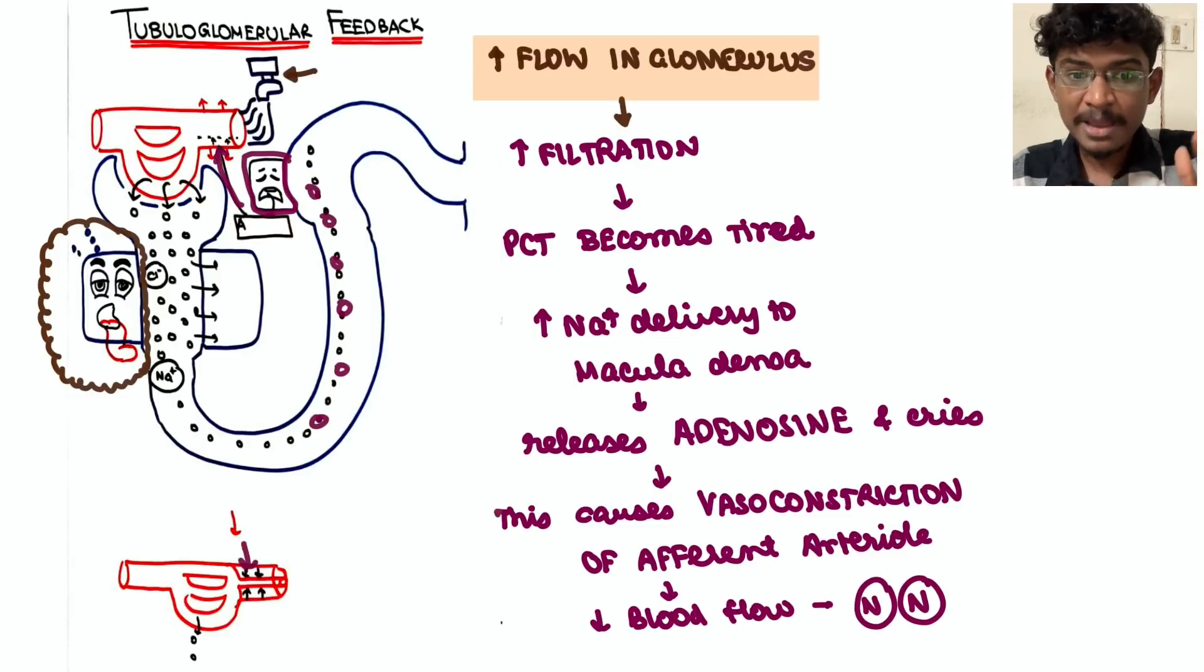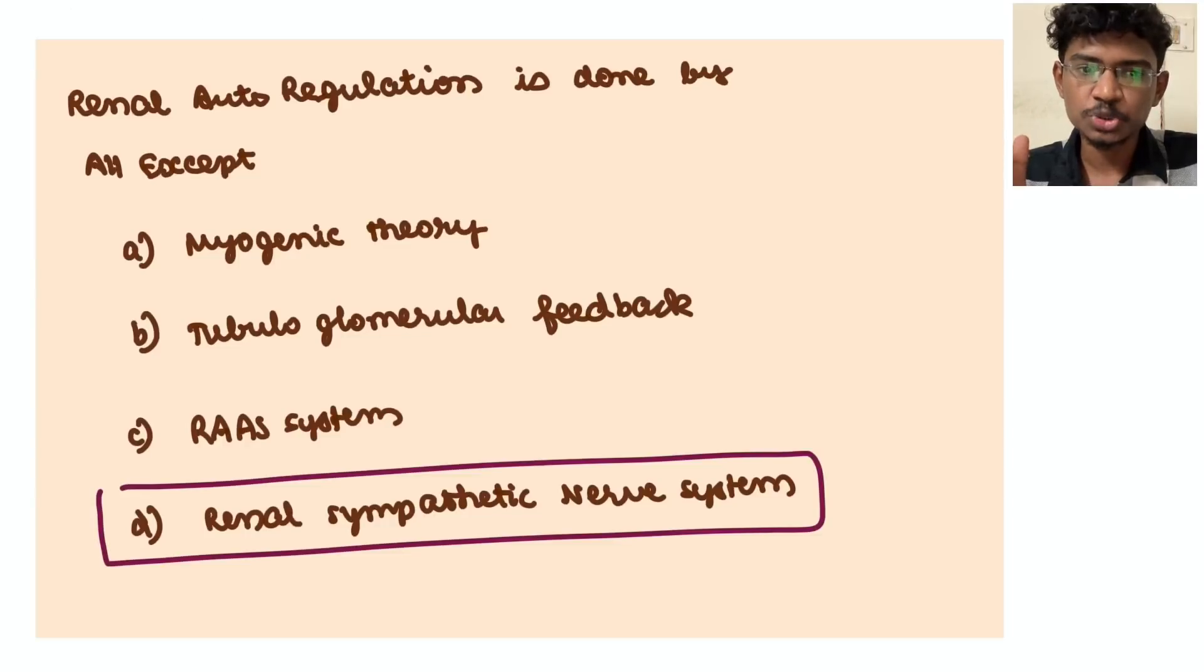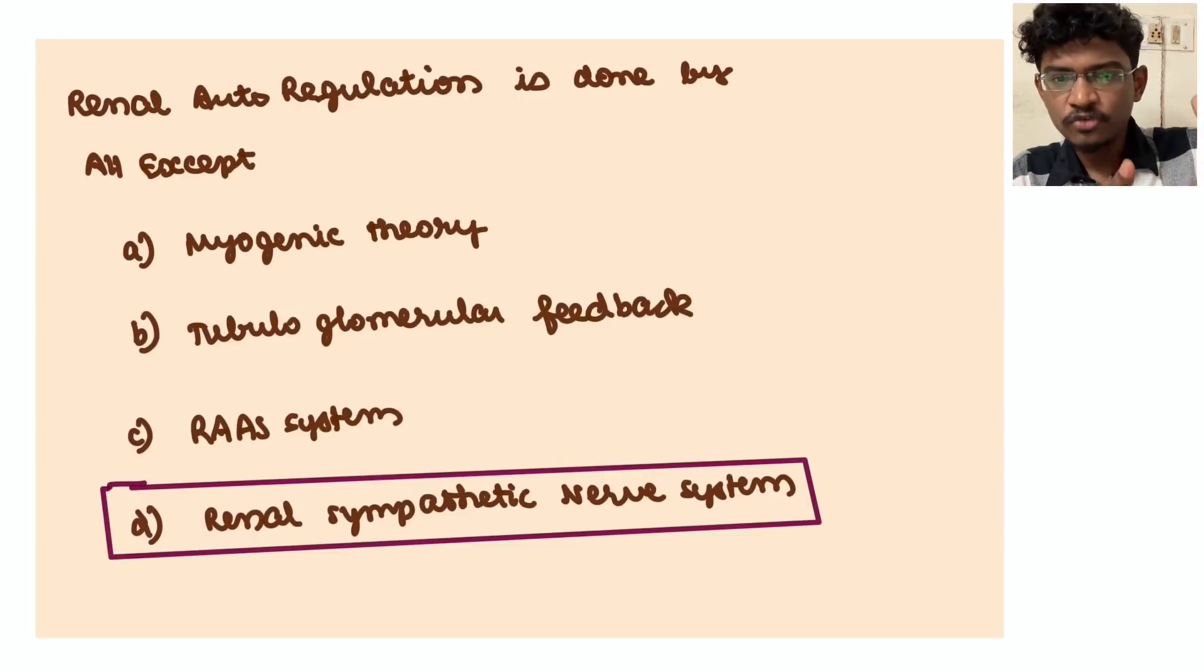As well as this macula densa also stimulates the renin-angiotensin-aldosterone axis - it's the source of renin. So thus the afferent arteriole is constricted and the increased blood flow which was directed is controlled. This is the autoregulation. So all three are there, but renin and sympathetic nervous system activity is not there.